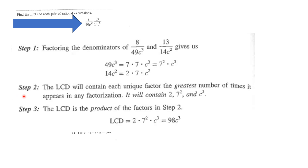The LCD will contain each unique factor the greatest number of times it appears in any factorization. So the LCD will contain 2, 7 squared, and c cubed. The LCD is the product of those factors, so the LCD is equal to 2 times 7 squared times c cubed, which equals 98c cubed.